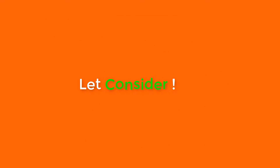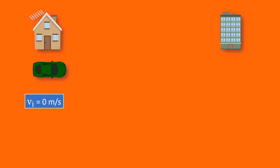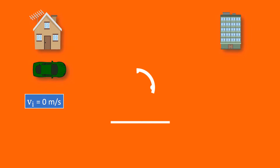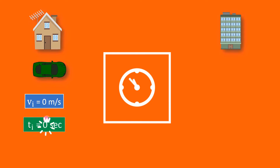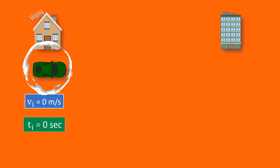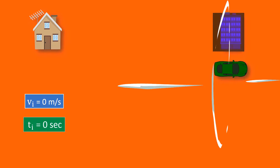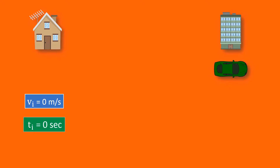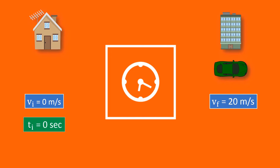Now consider you have decided to go to the nearby city from your home. Your car is standing in the lawn — its velocity here is zero meters per second. You come out of your home and note down the time; that time is zero seconds. You start your car and go to the city. When you enter the city, you note down your velocity — let it be 20 meters per second.